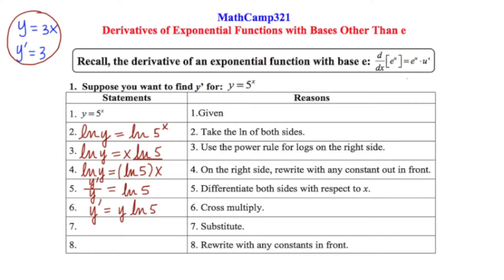Our next step is to substitute — we're going to substitute in for y, and we're told what y is right here in the beginning, so we'll make that substitution. Finally, in step eight, we rewrite with any constants out in front, and once again, ln5 is just a constant.